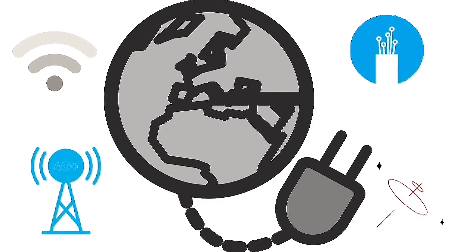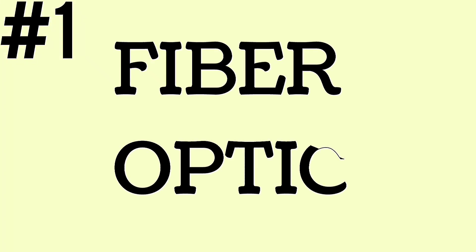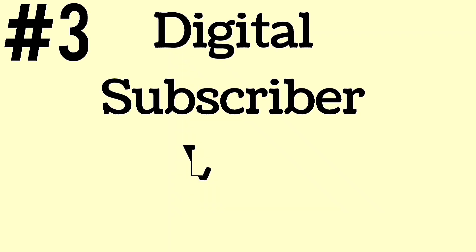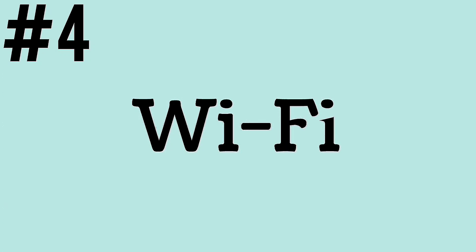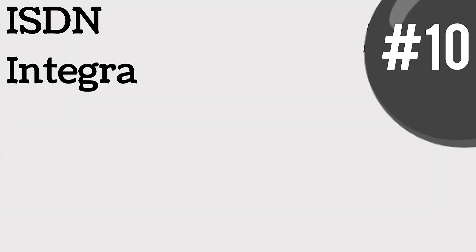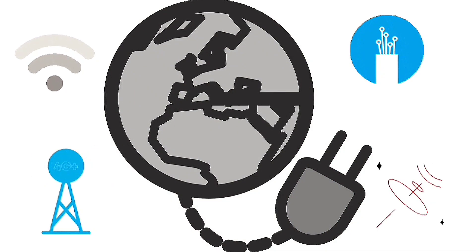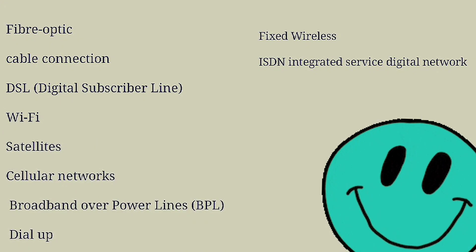What are the different types of internet connections? These include: fiber optic, cable connection, DSL (Digital Subscriber Line), Wi-Fi, satellites, cellular networks, broadband over power lines (BPL), dial-up, fixed wireless, and ISDN (Integrated Service Digital Network). These connection types are all methods that connect devices to an Internet Service Provider or to a network for accessing the internet.